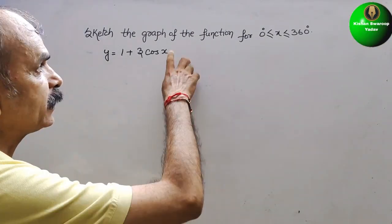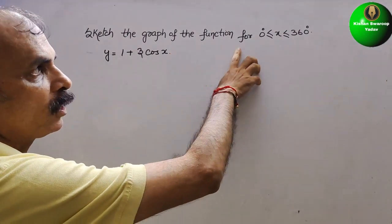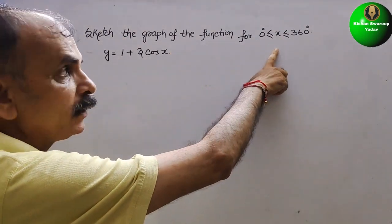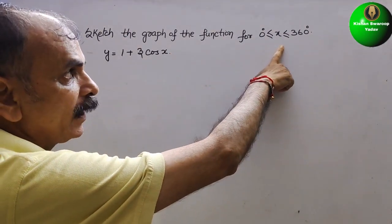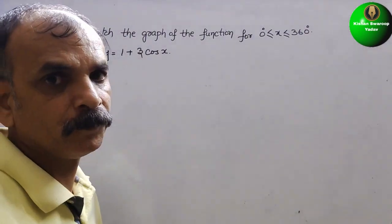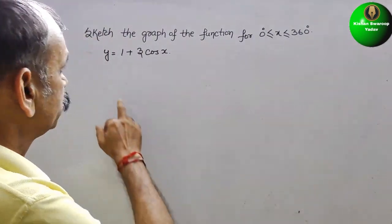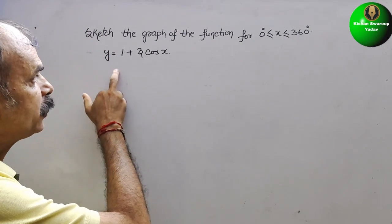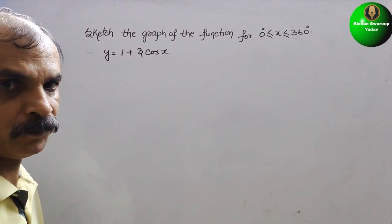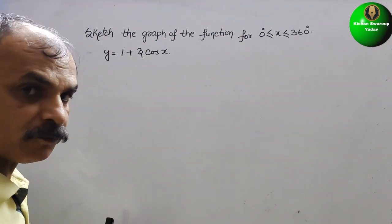The question is to sketch the graph of the function for 0° ≤ x ≤ 360°. They have given y = 1 + 3cos x. First, we will draw cos x.